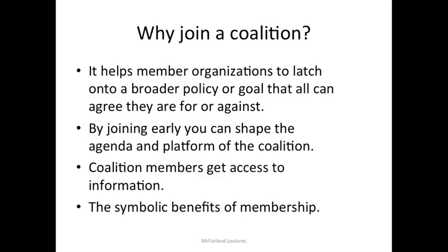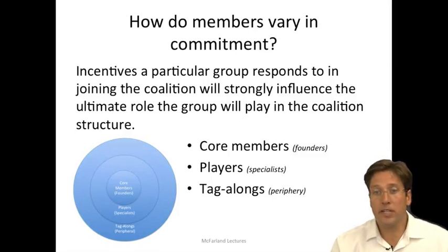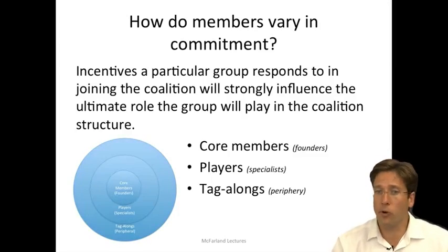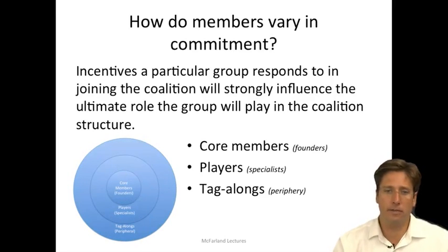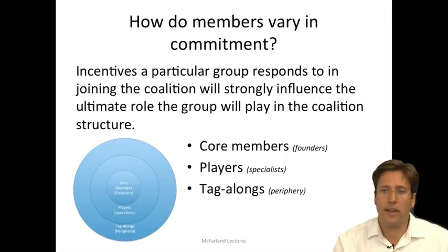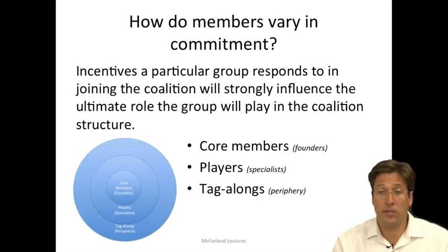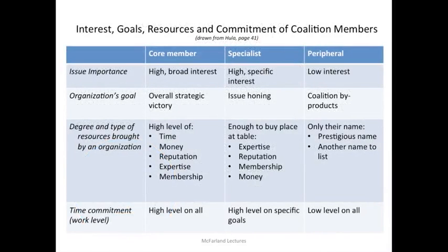Now that we have some idea why members join a coalition, we can start to explore why members vary in their commitment. The incentives a particular group responds to in joining a coalition strongly influences the ultimate role the group will play in the coalition structure. Understanding whether a group joins for strategic reasons or selective benefits helps determine whether it will become a core member, a specialist or player, or a peripheral tag-along member of that coalition. Keep in mind that peripheral groups aren't free-riding because all groups have entered into a transaction and the other participants have agreed to the legitimacy of the exchange. So here we have a coalition with three rings of concentric levels of commitment and different roles in bargaining.